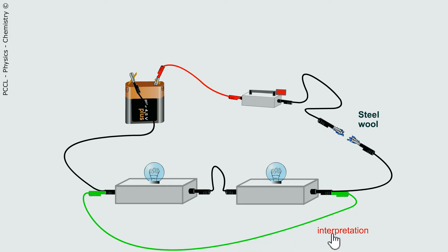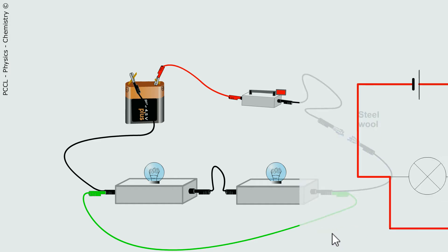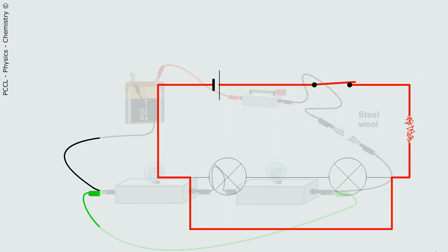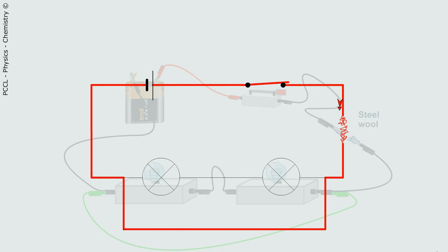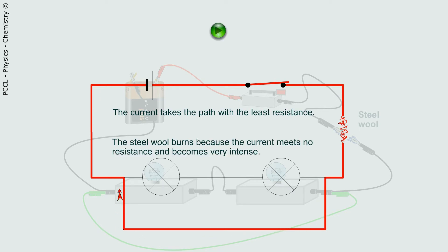We will seek to interpret: there was a green wire that shorted both bulbs at the same time. So what happened? The current went through the path that resisted the least, and the steel wool burned because the current was intense. The current has to be strong for the steel wool to be destroyed like that.